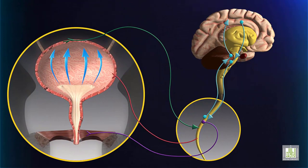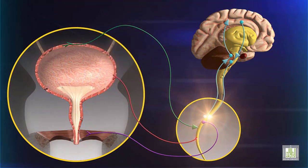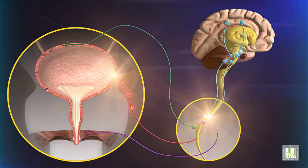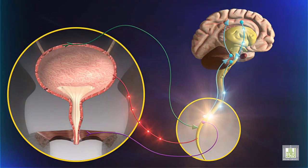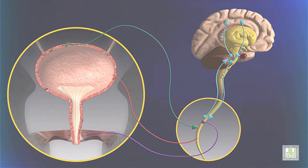When urination is desired, signals from the brain stimulate the micturition reflex. The brain also decreases action potentials in the somatic motor neurons to relax the external urinary sphincter.